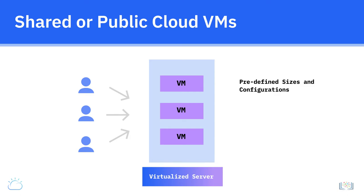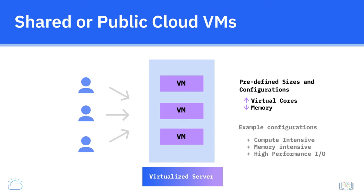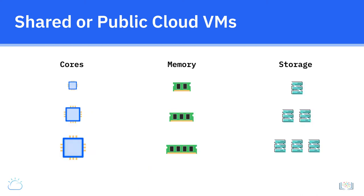To satisfy different workloads, cloud providers offer predefined sizes and configurations ranging from a single virtual core and a small amount of RAM to multiple virtual cores and much larger amounts of RAM. For example, there can be configurations for compute-intensive workloads, memory-intensive workloads, or high-performance I/O.